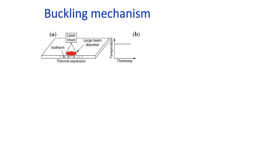In the previous lecture we have seen one important mechanism: the temperature gradient mechanism. In today's class we will be studying two more important mechanisms of laser forming — the buckling mechanism and the upsetting mechanism. In addition, we will look at some applications of laser forming in industry. Let us begin our discussion on buckling mechanism, which is the second mechanism used in industry, and its schematic is shown on your screen.